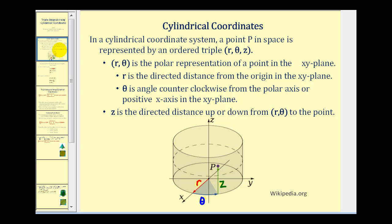In the cylindrical coordinate system, a point P in space is represented by an ordered triple (r, θ, z). Here, r and θ give the polar representation of a point in the xy-plane, where r is a directed distance from the origin. θ is the angle counterclockwise from the polar axis or positive x-axis in the xy-plane. And z is the directed distance up or down from (r, θ) to the point P.